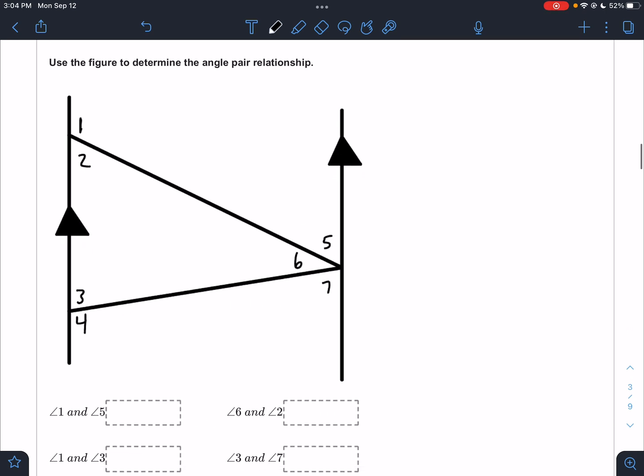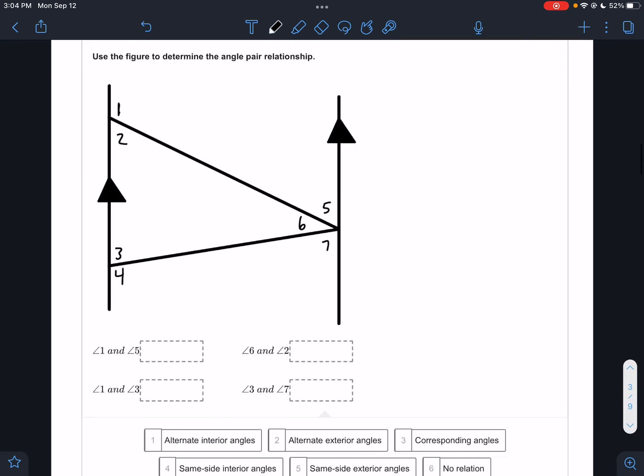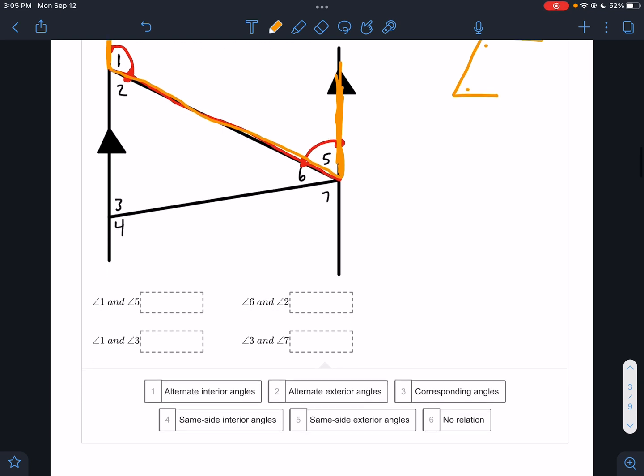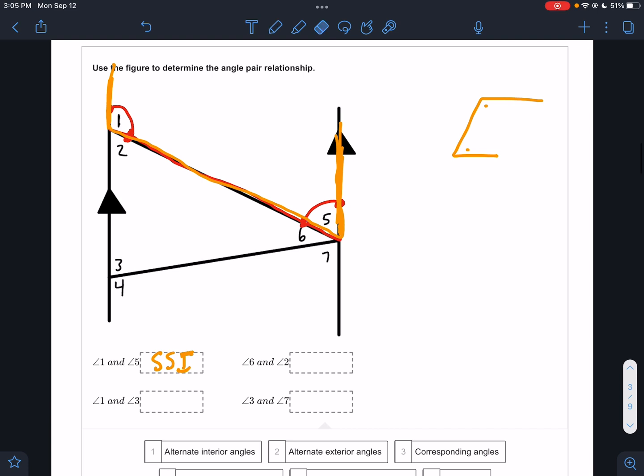Use the figure to determine the angle-pair relationship. So angle 1 and angle 5. If I trace angle 1, we've got this line and this line. If I trace angle 5, I've got this line and this line. So they share this one, that's called the transversal. And the other two lines would be the two orange ones. What kind of shape do they make? If you remember from my hints, that's like the letter C. It's facing upward, but it's like this thing. And the inside corners of that is going to be same side interior.